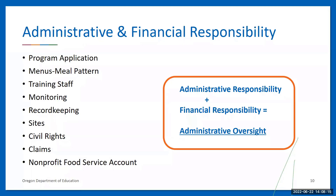Assuming administrative and financial responsibility means being accountable for and taking responsibility for the management of the CACFP to ensure it is operated in compliance with all program, federal, and state regulations. This includes all aspects of operating the CACFP: completing the program application, ensuring menus meet meal pattern requirements, training administrative and operational staff, conducting monitoring, financial and program record keeping, managing changes to program sites, civil rights compliance, validating and submitting claims for reimbursement, reimbursing homes for meals served, and tracking the use of federal funds.